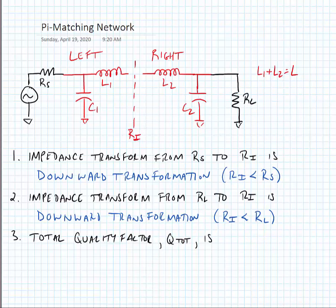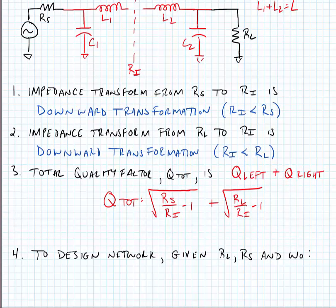The total quality factor of the network, Q_total, is the sum of Q_left and Q_right. In other words, Q_total equals the square root of (RS over RI minus 1) plus the square root of (RL over RI minus 1). Effectively, we have two independent matching networks — the left network and the right network — each doing their respective impedance transformations.